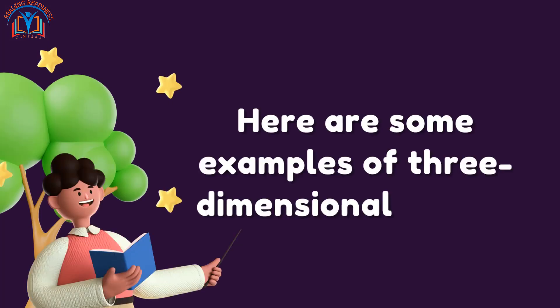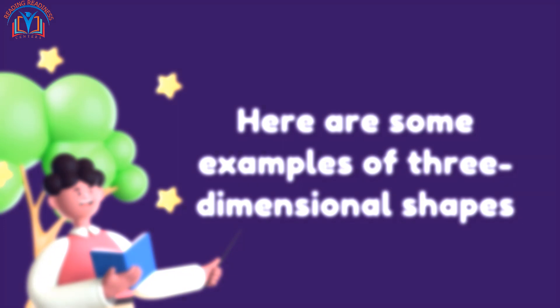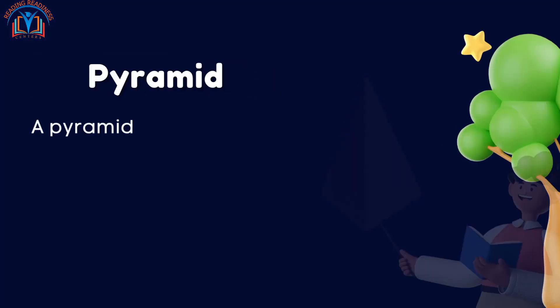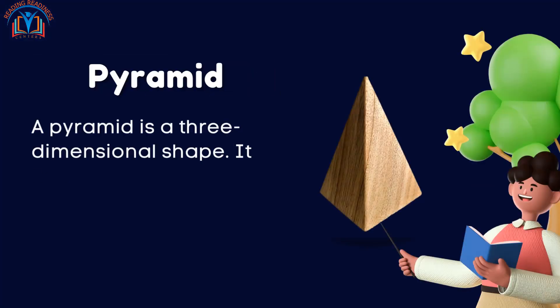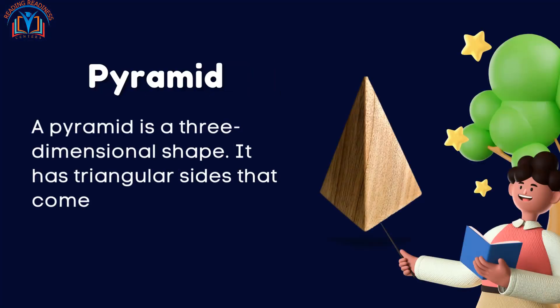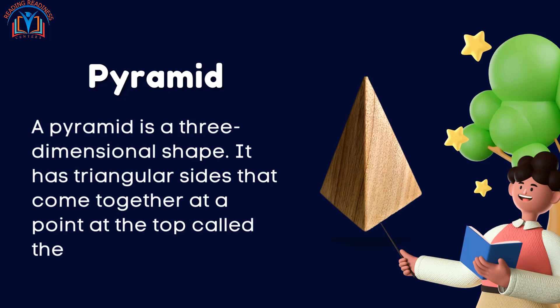Here are some examples of three-dimensional shapes. Pyramid. A pyramid is a three-dimensional shape. It has triangular sides that come together at a point at the top called the apex.